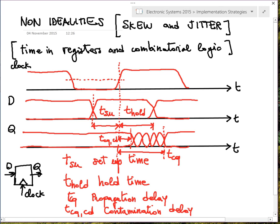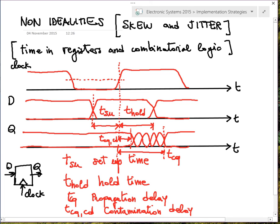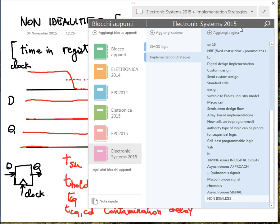So: before T_CQ_CD nothing changes; after some time changes occur; and after T_CQ the output is constant. The origin of the term 'contamination delay' will become clear later. Similar quantities can be defined for combinatorial logic.